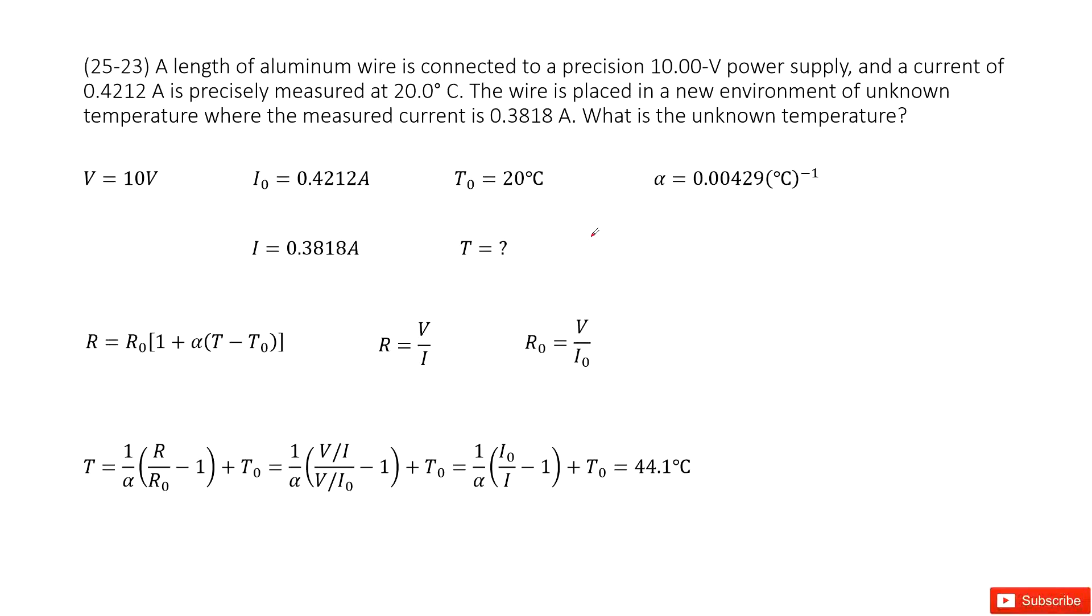So you can see we have a wire, right, aluminum wire, and then tell us the power supply is 10 volts. At initial, when the temperature is 20 centigrade, the current we write it as I₀ is equal to this number.